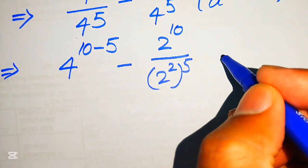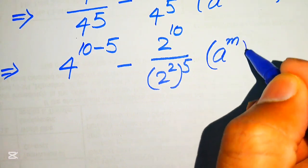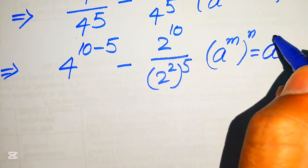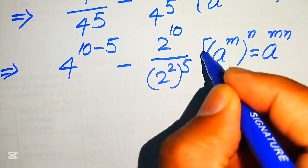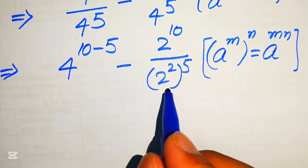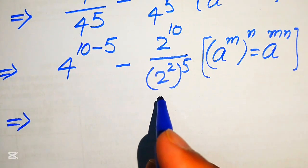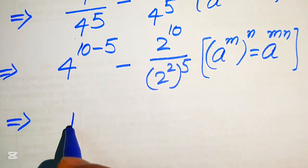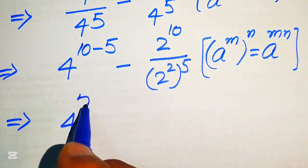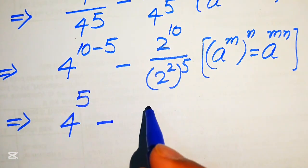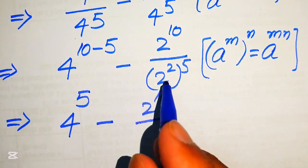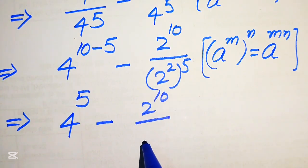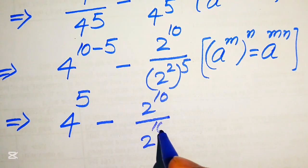In the next step we use another exponent law: if you have a to the power of m, to the power of n, it equals a to the power of m multiplied by n. Applying this in the denominator, we get 4 to the power of 10 minus 5, minus 2 to the power of 10 divided by 2 to the power of 10 — since 2 times 5 equals 10.